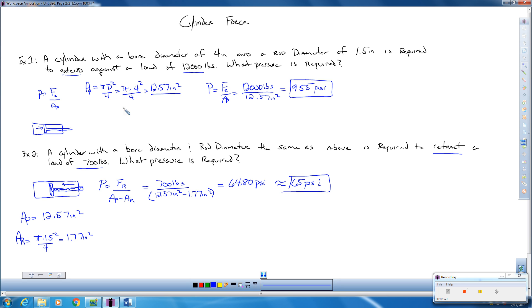So if we're looking at this cylinder, for it to extend against a load of 12,000 pounds, that means over here we've got 12,000 pounds we're going to be pushing, it takes 955 psi. If we're going to retract, and we've got a load of 700 pounds, it's going to take us approximately 65 psi. So there's some basic calculations involving cylinder force for extending and retracting a cylinder.